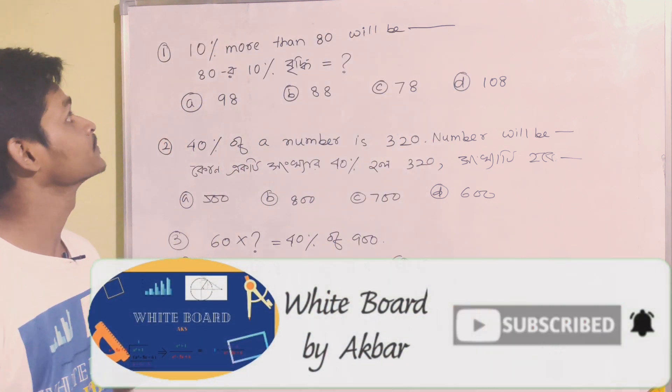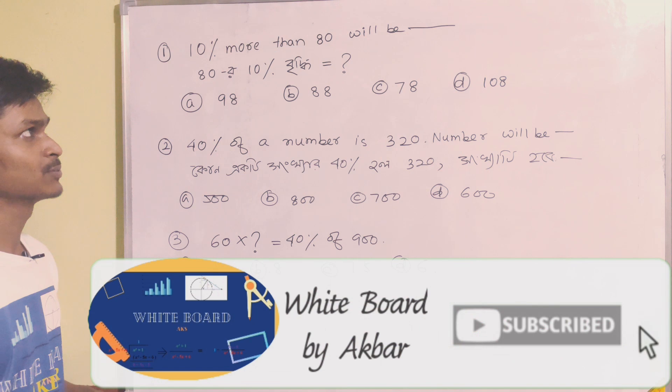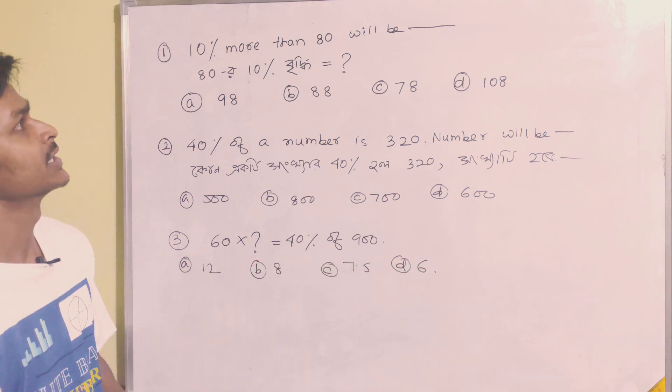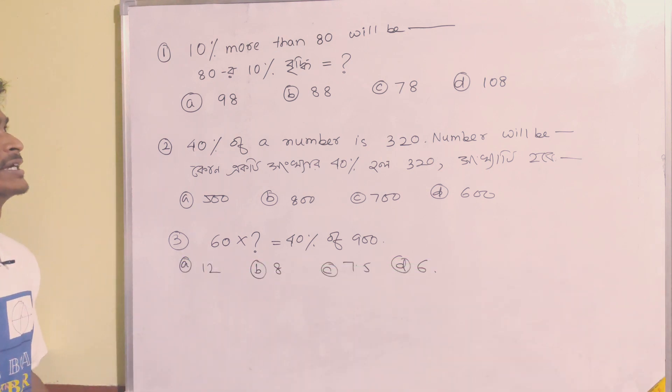The first question is: 10% more than 80.